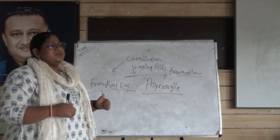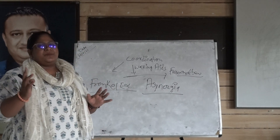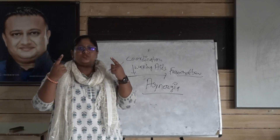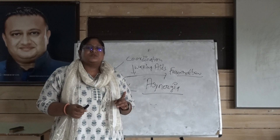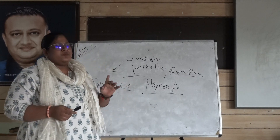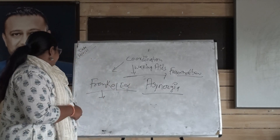Then we will talk about the upper limb. In the upper limb, we have all the joints — shoulder, elbow, and wrist joints. Every movement we have to focus on.